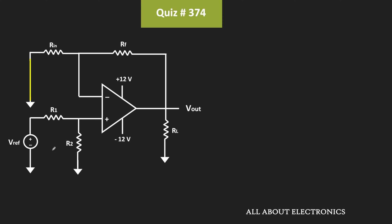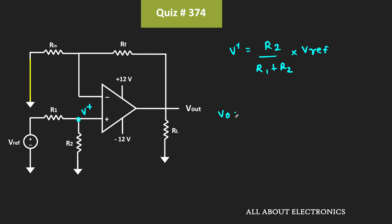Since the op-amp is ideal, no current flows into the op-amp terminal. Let the voltage at the non-inverting input be V+. This voltage V+ will be equal to R2 divided by (R1 plus R2) times Vreference. This V+ acts as an input for the op-amp. The output voltage in this case, Vo1, is equal to V+ times (1 plus Rf divided by Rin).